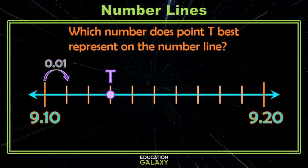So if each space is 1 hundredth, that makes the first tick mark after 9 and 1 tenths 9 and 11 hundredths, which makes the next tick mark 9 and 12 hundredths, and finally, point T is at 9 and 13 hundredths.